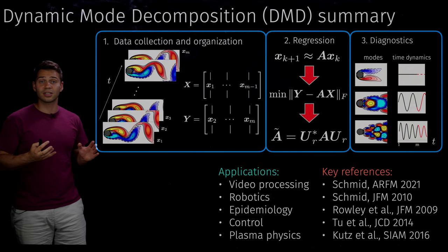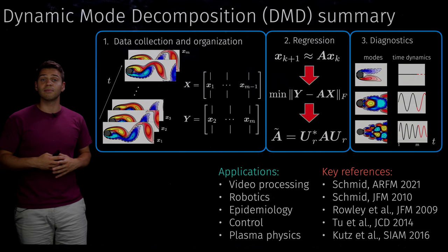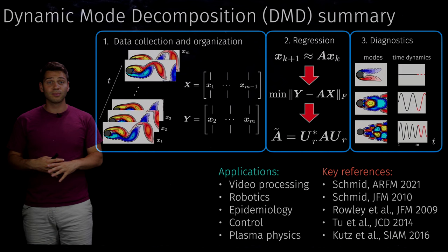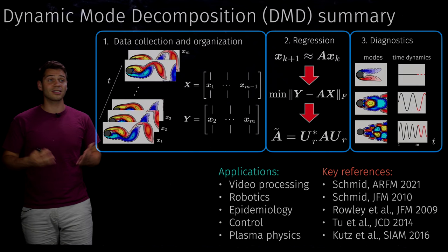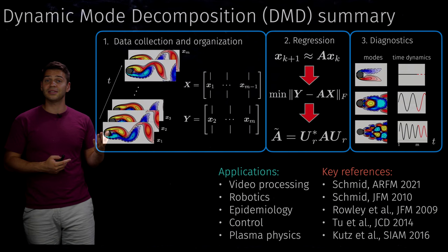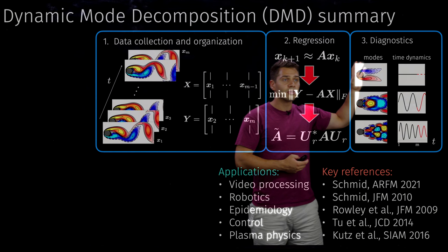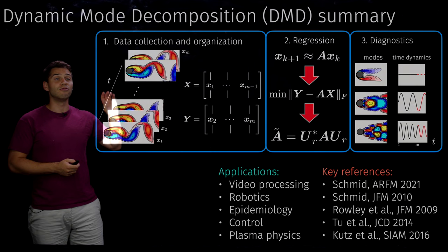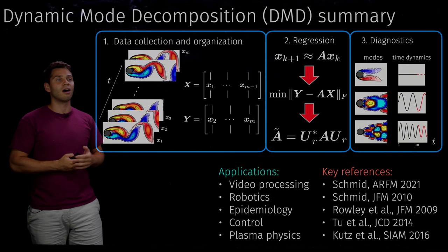We project matrix A onto the first R principal components, giving us that linear operator in a tractable low-dimensional space. The most popular diagnostic is to look at the dynamic modes — the eigenvectors and eigenvalues of that matrix A. The modes are the spatial eigenvectors, and the time dynamics correspond to the eigenvalues. We can decompose the data into a linear combination of spatial modes with time dynamics given by the corresponding eigenvalues.